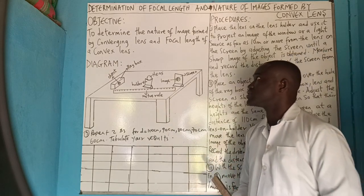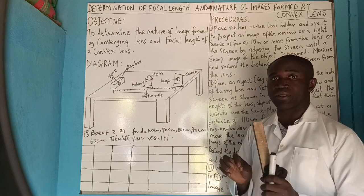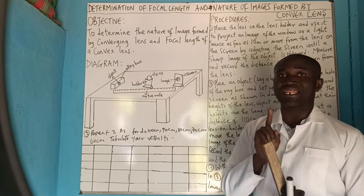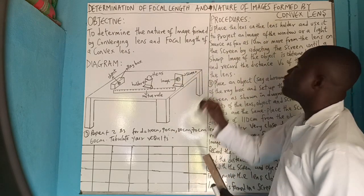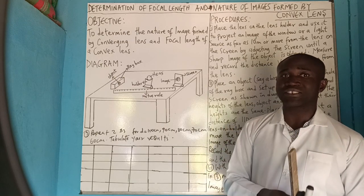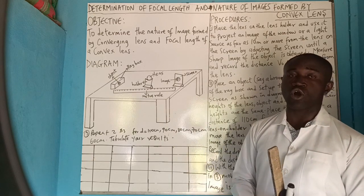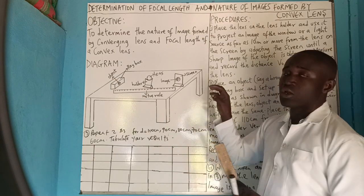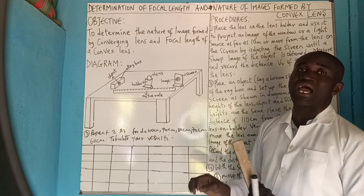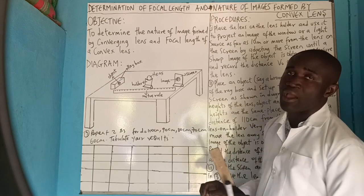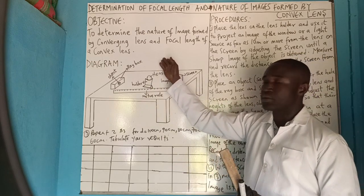Welcome guys to today's class. In today's video, I want to discuss another very important experiment in physics: the determination of focal length and nature of image formed by a convex lens. We have a convex lens, which we call a converging lens, and a concave lens, which we call a diverging lens. This experiment will focus on determination of focal length and nature of images formed by a convex lens, as shown on the board.